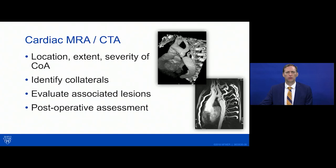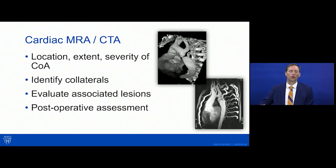Advanced aortic imaging is important to locate the exact coarctation, understand collateral vessel significance — particularly for predicting surgical bleeding risk — rule out associated aneurysms or other aortic abnormalities such as middle aortic syndrome, and establish a good baseline to compare against post-intervention imaging, whether the patient goes to the cath lab or the OR.